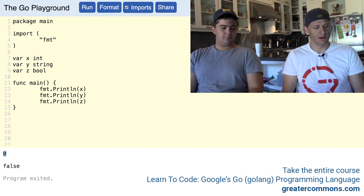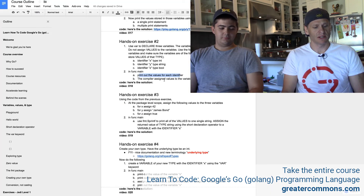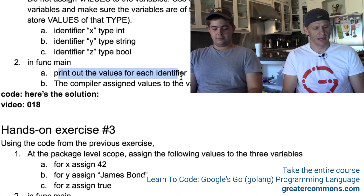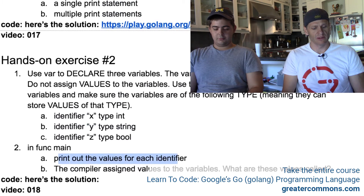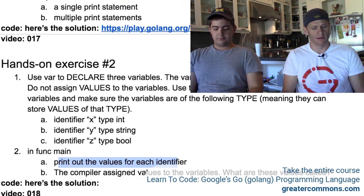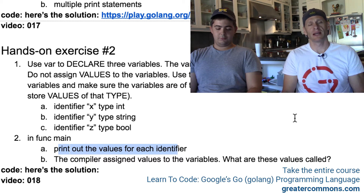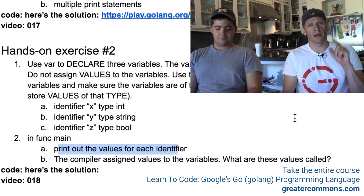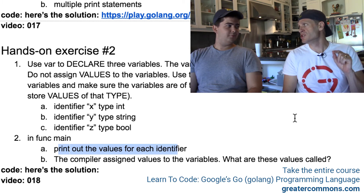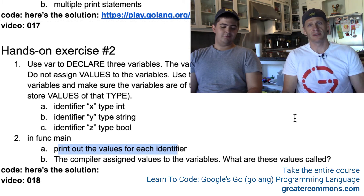We have zero, we have emptiness — an empty string — and we have false. The last question in this hands-on exercise is: the compiler assigned values to the variables. What are these values called? Those values are called the zero value. That's hands-on exercise number two. You're well on your way to achieving Jedi level number one. Keep doing the hands-on exercises — you're getting there.